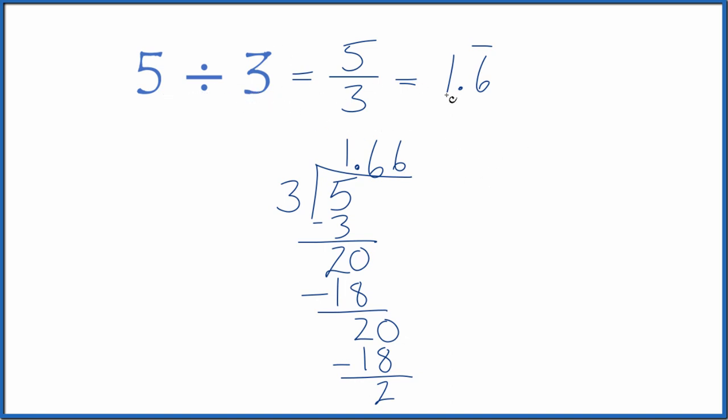5 divided by 3 equals 1.666 and the 6 keeps going, so we just put the bar over that. Do also note that 5 thirds, the fraction, is an improper fraction. So we could make it a mixed number. We could call it 1 and 2 thirds. That's the same thing as 5 thirds or 1.6 with the 6 repeating.